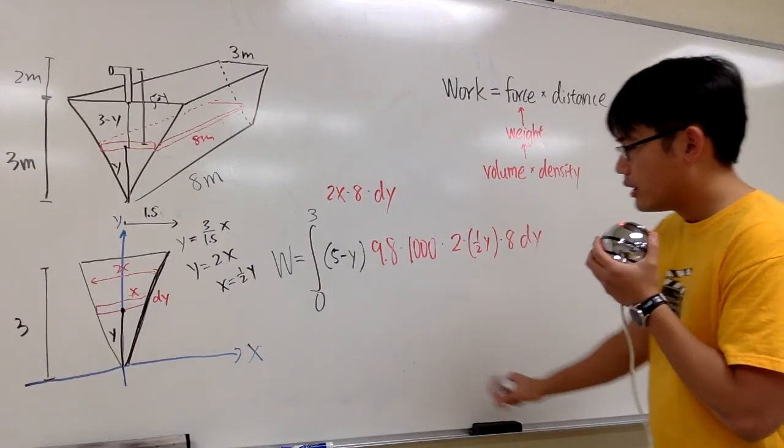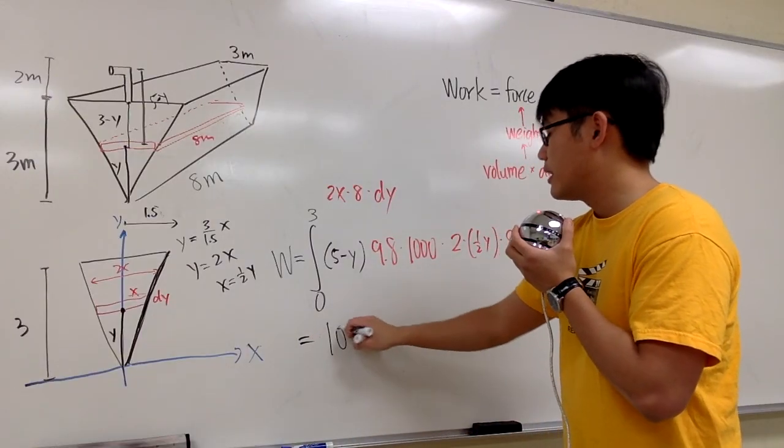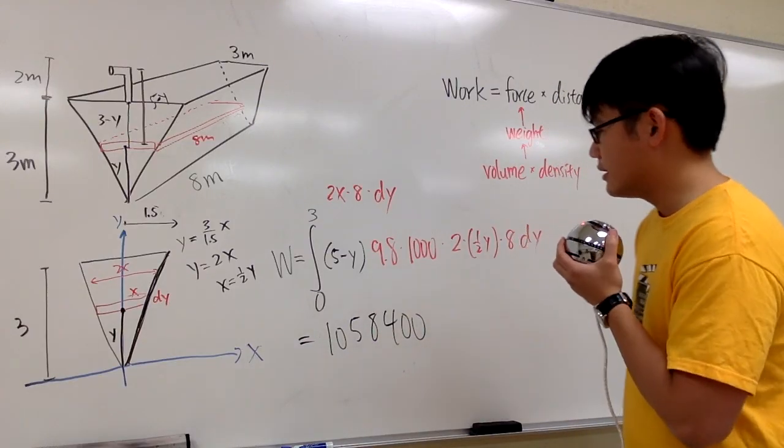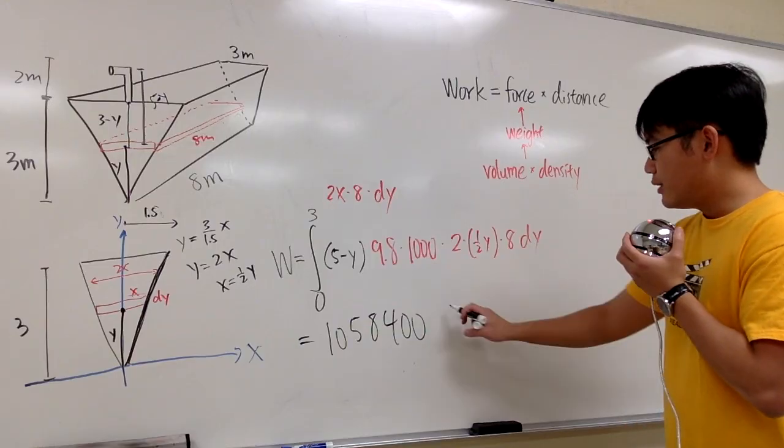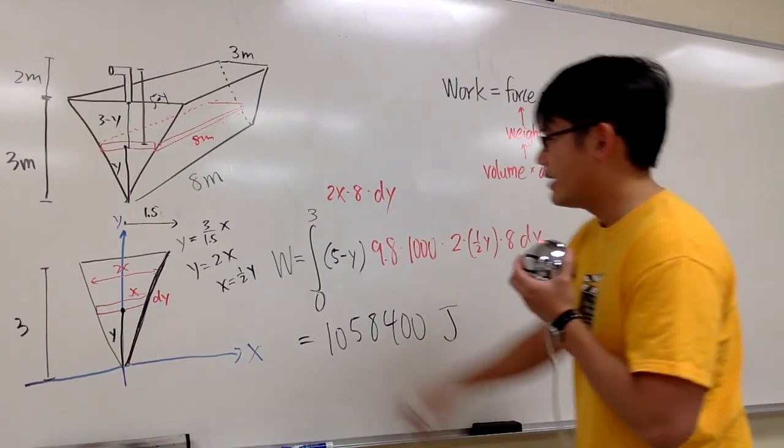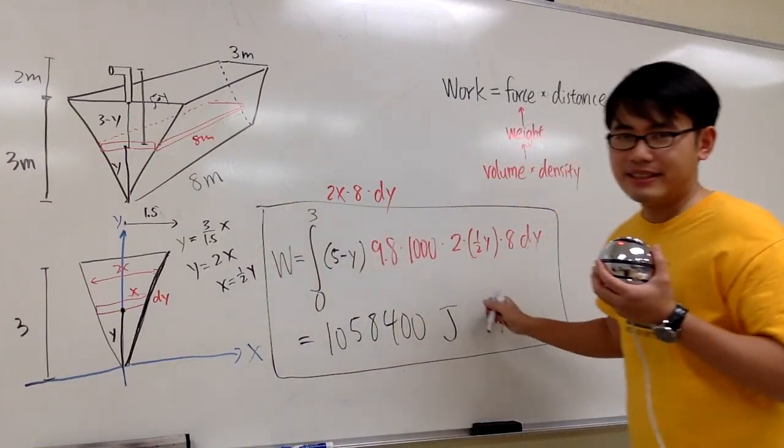And if you worked out this integral, the answer to this is 1,058,400. And the unit for this, for the work in the SI unit, is Joules. And this right here is the answer. That's it.